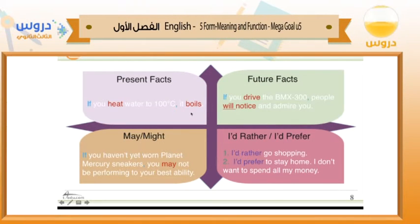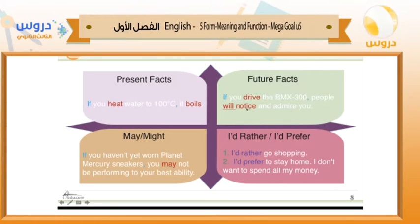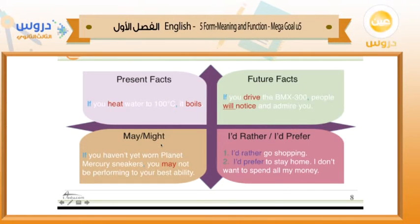For present facts, here is an example: 'If you heat water to 100 degrees centigrade, it boils.' This is a fact, so we use present simple in both clauses. For future facts: 'If you drive the BMW 300, people will notice and admire you.' This is a fact that will happen in the future, so the structure is different. For may or might: 'If you haven't worn planning marker sneakers, you may not be performing to your best ability.' Here, 'may' shows it's possible but not certain. Finally, 'I'd rather' or 'I prefer' expresses preference — for example, 'I'd rather go shopping' or 'I'd prefer to stay home.'